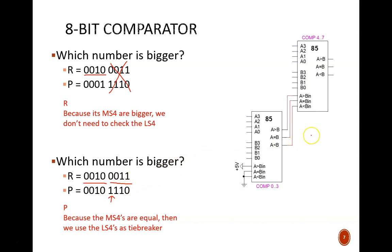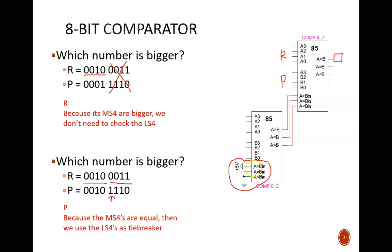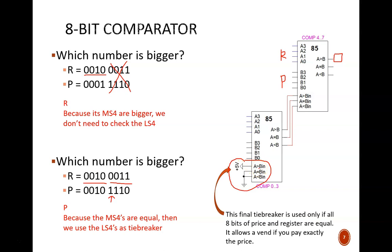This leads to connecting the comparator devices as shown. The final result will be the A greater than B line leaving the more significant comparator. If register is greater than price in the upper comparator, then vend is available. If there is a tie there, refer to the less significant comparator. Finally, if there is a tie in the lower comparator, that means all 8 bits are equivalent — the user has input exact change — and a final tie breaker provided by the +5V signal says that vend should be available. This is the same idea used in the previous model.